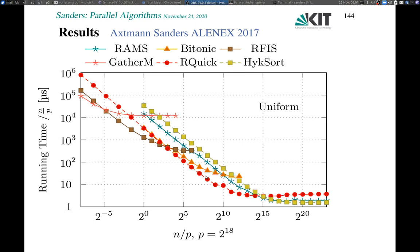The problem with the quicksort algorithm was that all the data was communicated a logarithmic number of times — log number of processors. Now we want to look at algorithms that communicate the data only a constant number of times, possibly only once.